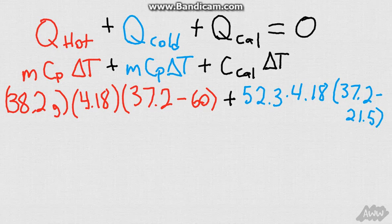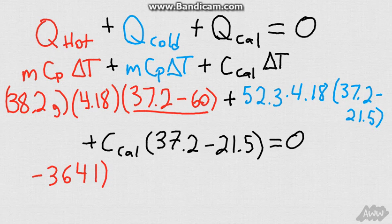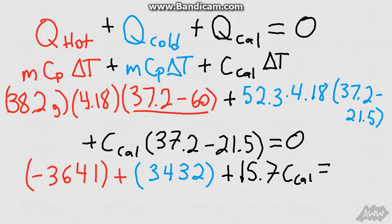Now, finally, we are going to have to add our calorimeter constant. So we are going to get plus the C of our calorimeter. And we are going to then multiply that by our final temperature of our calorimeter minus our initial temperature. And all of this equals zero. So we are going to get, if we multiply all these numbers out, we will get negative, because 37 is less than 60. So we will get a negative number, negative 3641, plus our cold, which will be 3432. And we are then going to add our loss from our calorimeter. And that will be 15.7 times our calorimeter constant of C Cal, and all of this will be equal to zero.